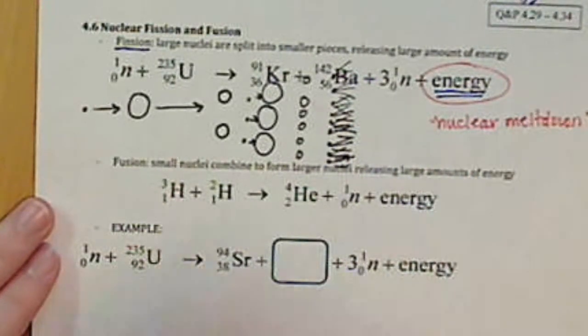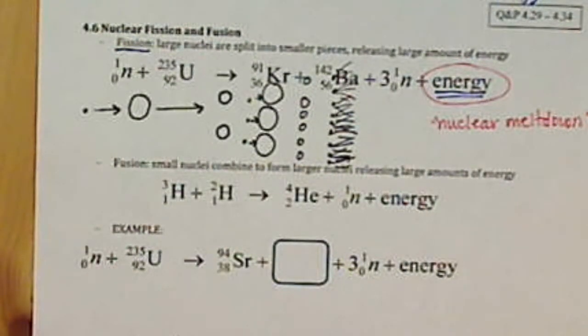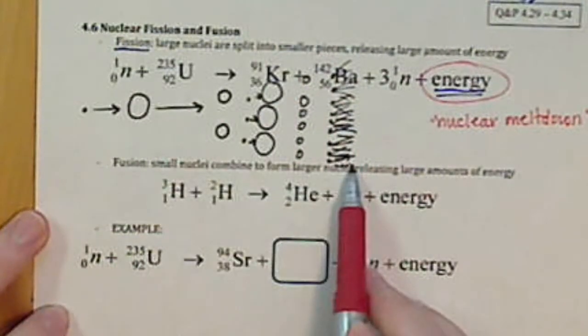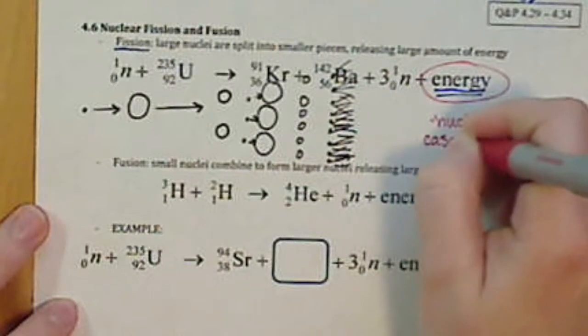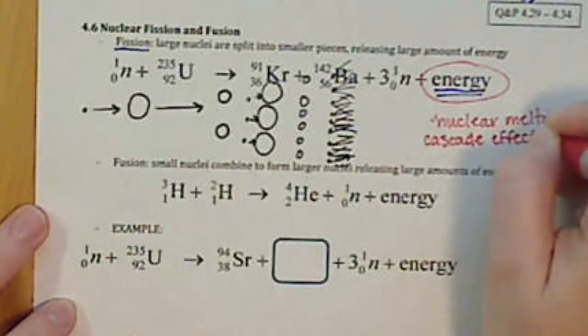That's why most people do not like nuclear energy. They don't like this concept of nuclear meltdown and what it means. And basically, in very simplistic terms, what happens in this nuclear meltdown is this reaction, this cascade effect gets out of control.